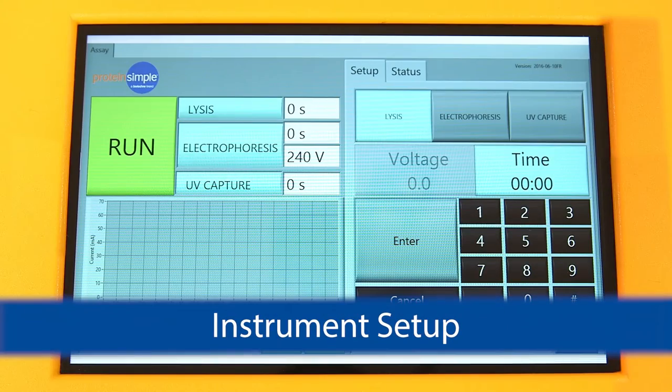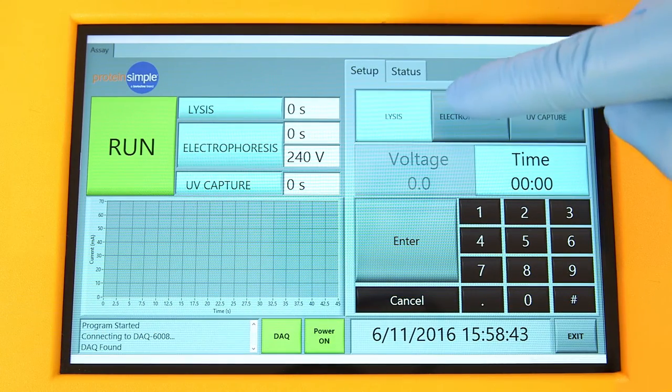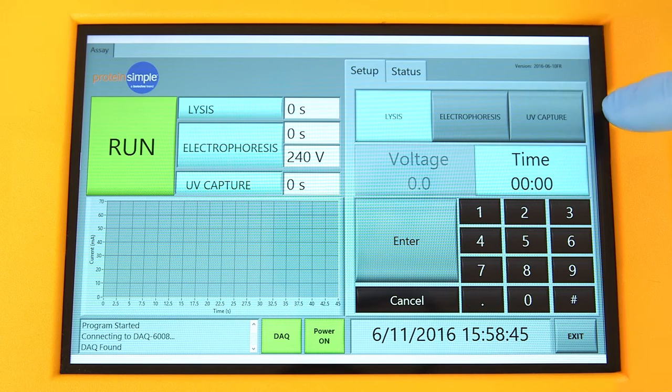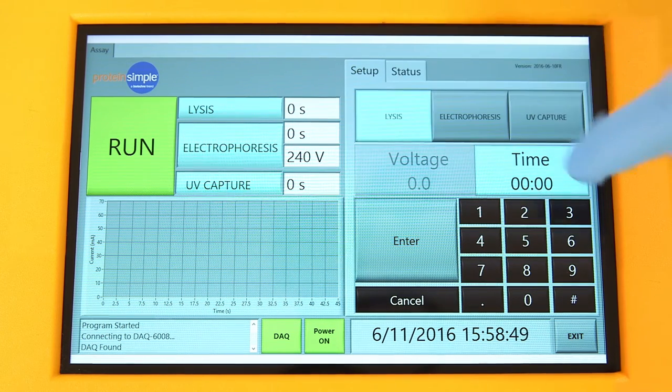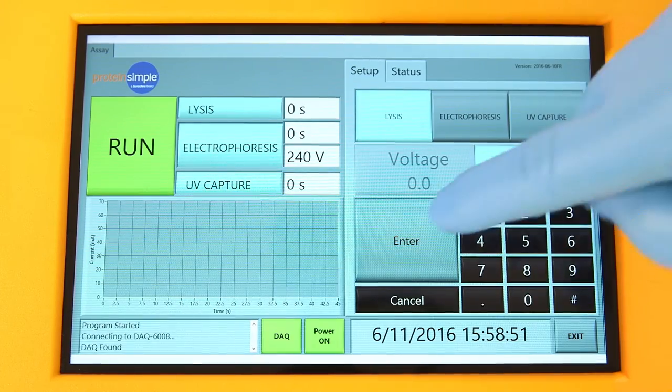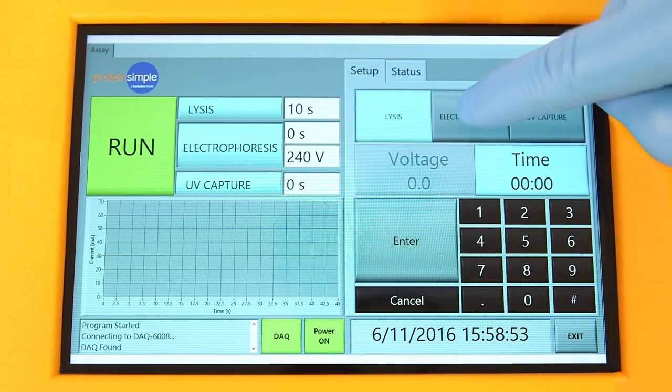There are three parameters that need to be entered before running Milo: lysis time, electrophoresis time, and UV capture time. First, select the parameter that you want to change and then enter the time using the keypad followed by enter.